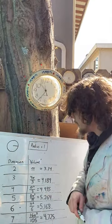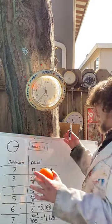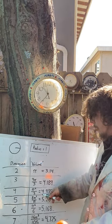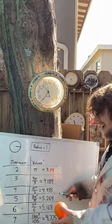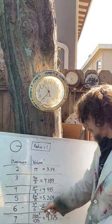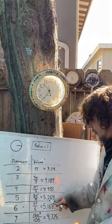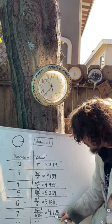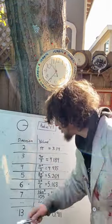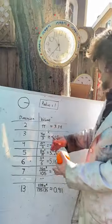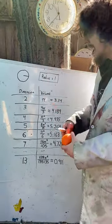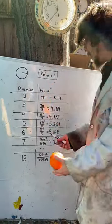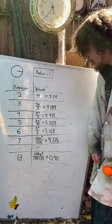And in the fourth dimension, a hyper ball with radius 1 would have a hyper volume of a bit more. And as we go forward we get more and then less, and it starts shrinking. By the time we're at a 13-dimensional hyper ball with radius 1, its 13-dimensional version of volume is less than one.